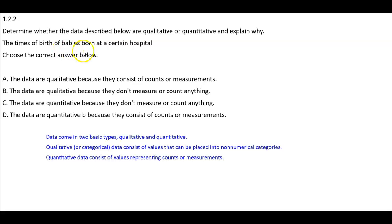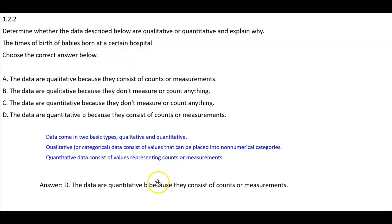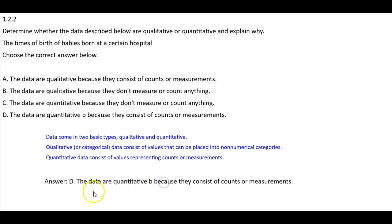So again, the times of birth of babies born at a certain hospital. The answer is going to be D, because the data are quantitative because they consist of counts or measurements.